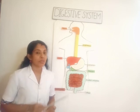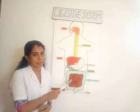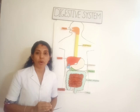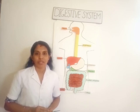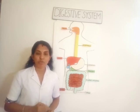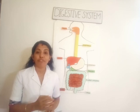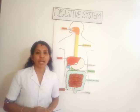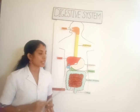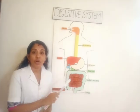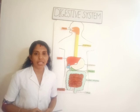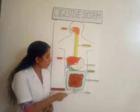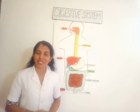All these digestive juices break down food into simpler substances, and digestion is completed in the small intestine. The digested food is now in a simple soluble form. The walls of the small intestine have blood vessels, and the blood absorbs this digested food through the walls of the small intestine, taking it to different parts of the body where energy is produced. The undigested food then passes into the large intestine, where water is absorbed, and the remaining solid waste is removed from the body through an opening called the anus.